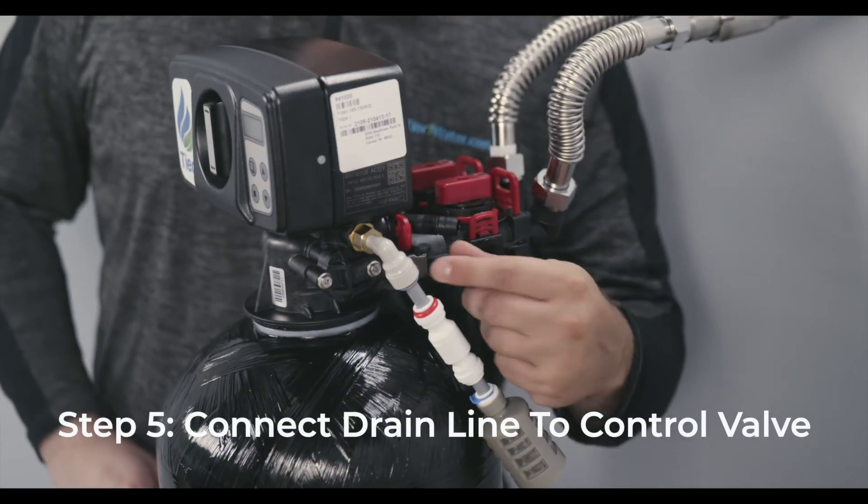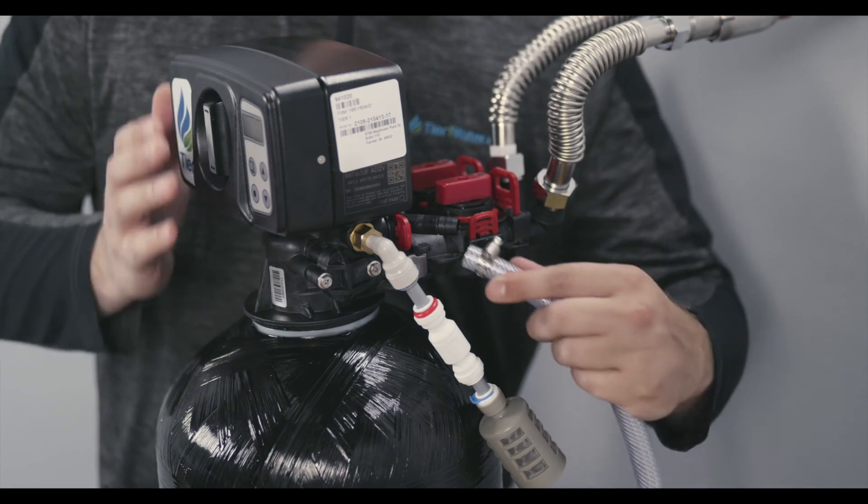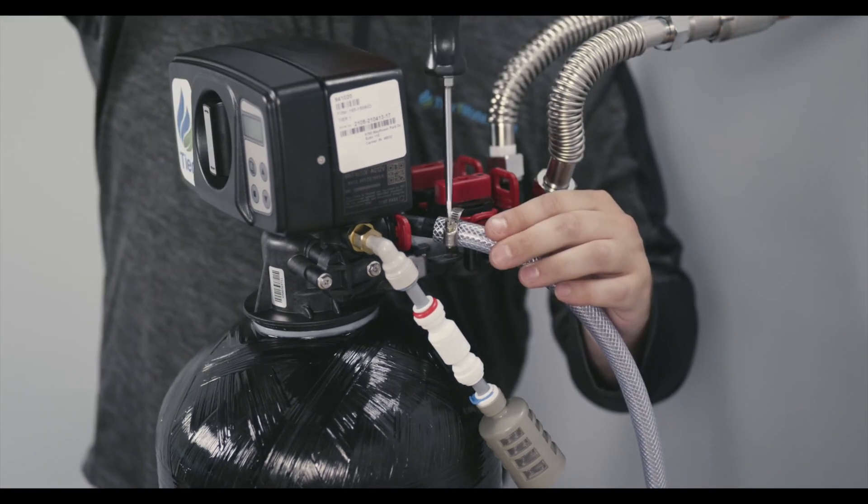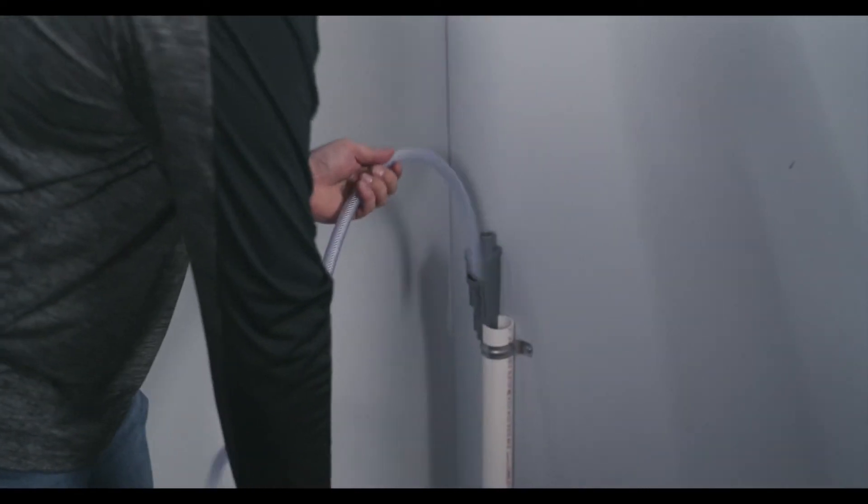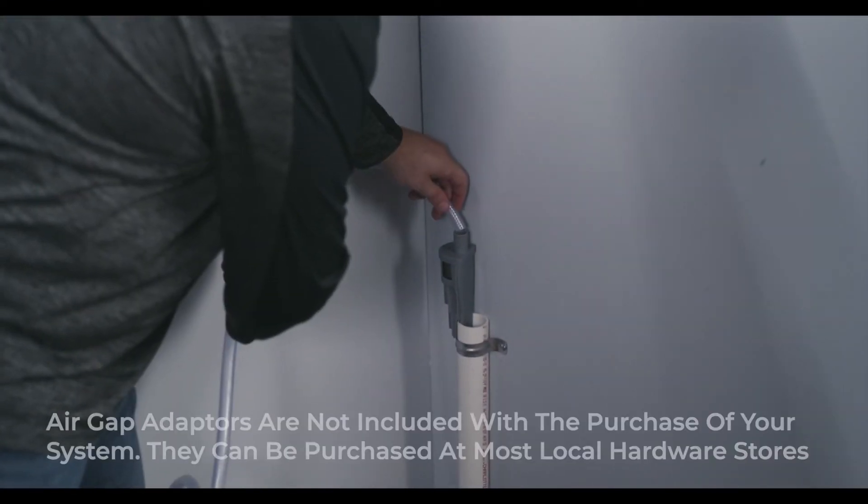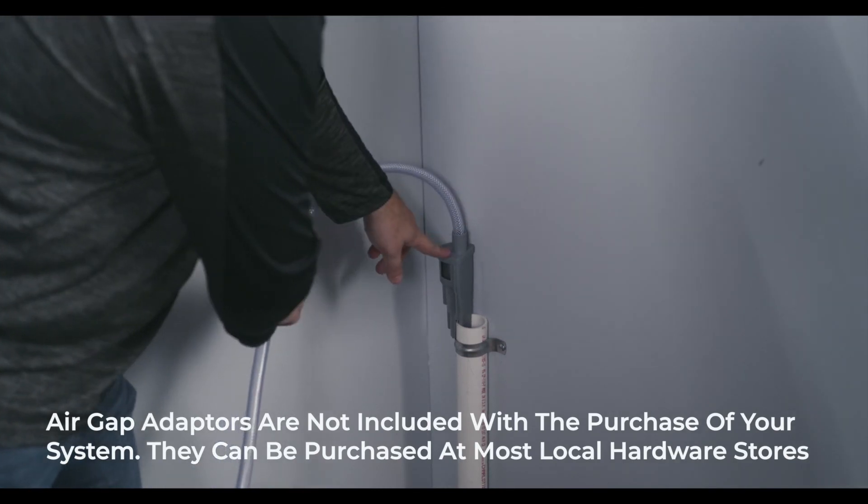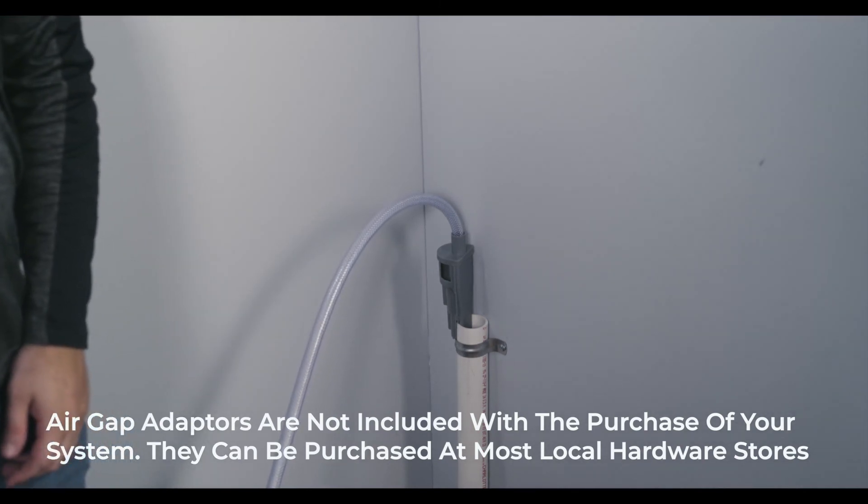Verify that the drain hose barb is attached to the drain port in the control valve with a red clip. Attach the drain hose to the hose barb and tighten securely with a hose clamp. Run the drain line to a floor drain or a laundry drain. Never insert the drain line directly into a drain, sewer line or trap. You must allow an air gap between the drain line and the wastewater to prevent the possibility of sewage being back-siphoned into the filter.